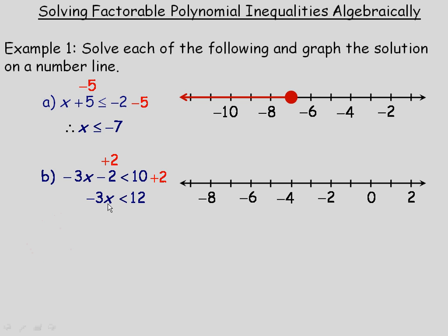When I isolate x by dividing by negative 3, the direction of the inequality changes to greater than, giving x is greater than negative 4. That means all numbers above negative 4, but we do not include negative 4 itself since there's no equal sign. So we put an open circle on negative 4 and the arrow goes to the right, representing numbers bigger than negative 4.